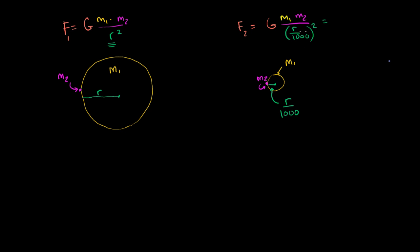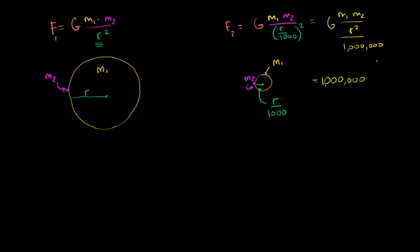Or if we simplify this, gravitational constant m1 m2 over r squared over 1,000 squared, or over 1,000,000. Or we can multiply the numerator and the denominator by a million, and this is going to be equal to 1,000,000 times the gravitational constant times m1 m2, all of that over r squared. Now what is this thing right over here? That's the same thing as this f1.